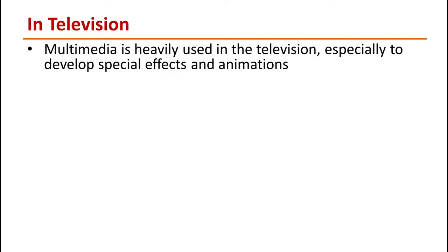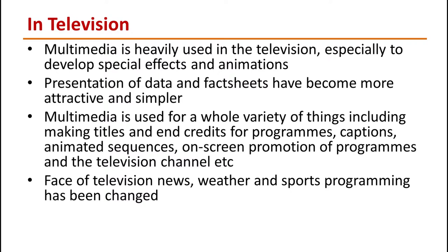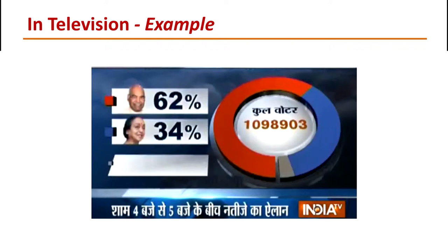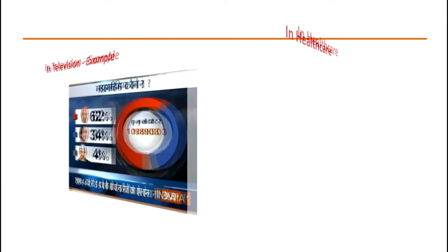Like print media, television also uses multimedia for various purposes. It is used to develop special effects and animations, presentation of data and fact sheets in an attractive and simpler way, as well as to make various other things like titles, credits, and captions. Television news now has a visually aesthetic way to attract, engage, and communicate with viewers. The use of advanced computer-generated graphics is thought to enhance information content and communication capability for news programming. In this video, you can see how multimedia has been used to present the results of the presidential election in 2017.